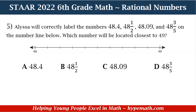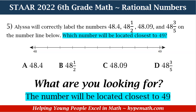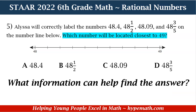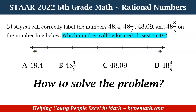Number 5. Alyssa will correctly label the numbers 48.4, 48.5, 48.9, and 48.3 on the number line below. Which number will be located closest to 49? Is it A, 48.4; B, 48.5; C, 48.9; or D, 48.3? The first question we're going to ask ourselves — the most important question — is what are we looking for? We are looking for the number that is located closest to 49. The information that can help find the answer are our numbers, and what we need to do is convert two of them.